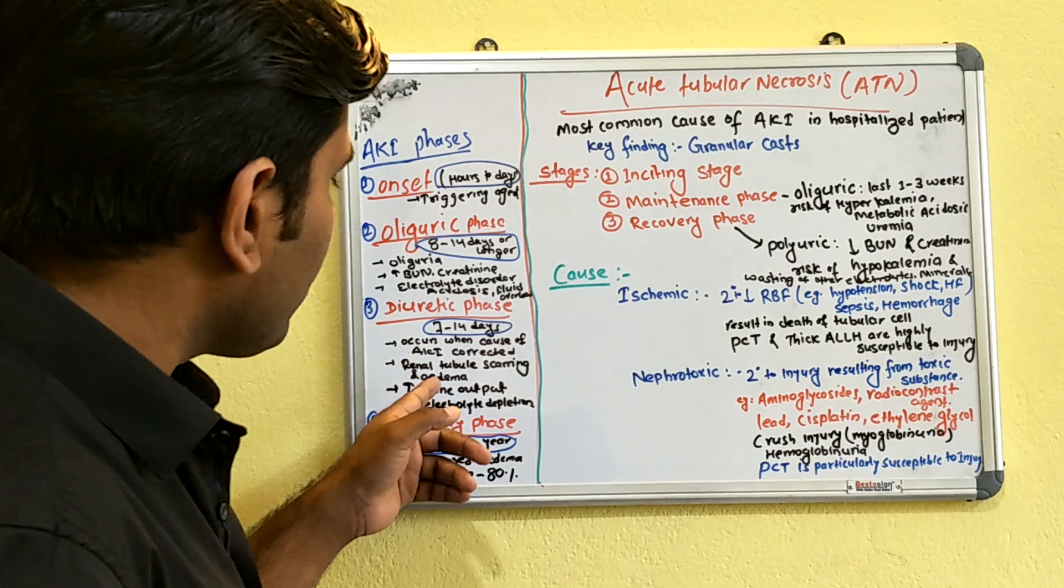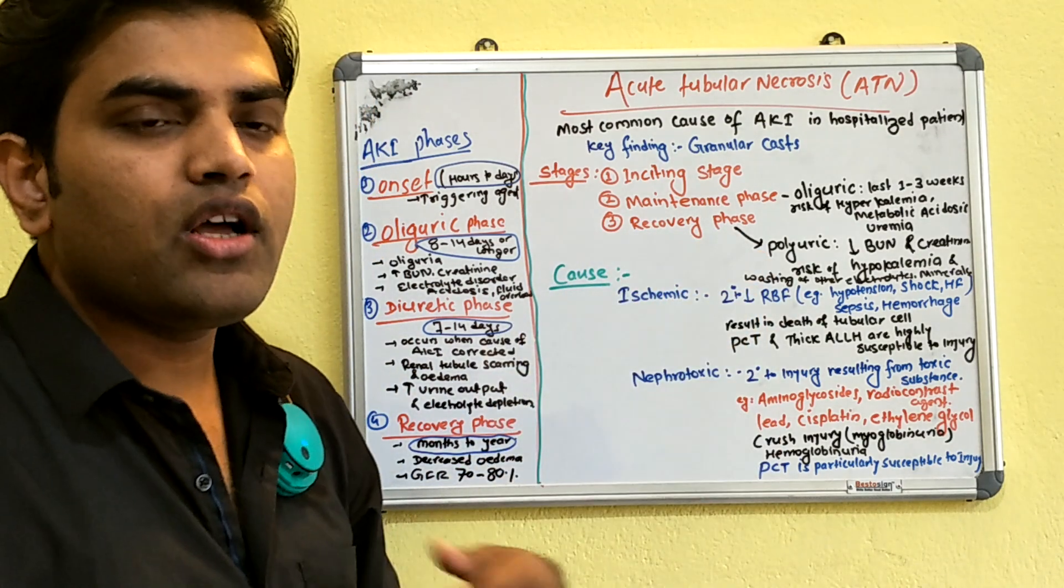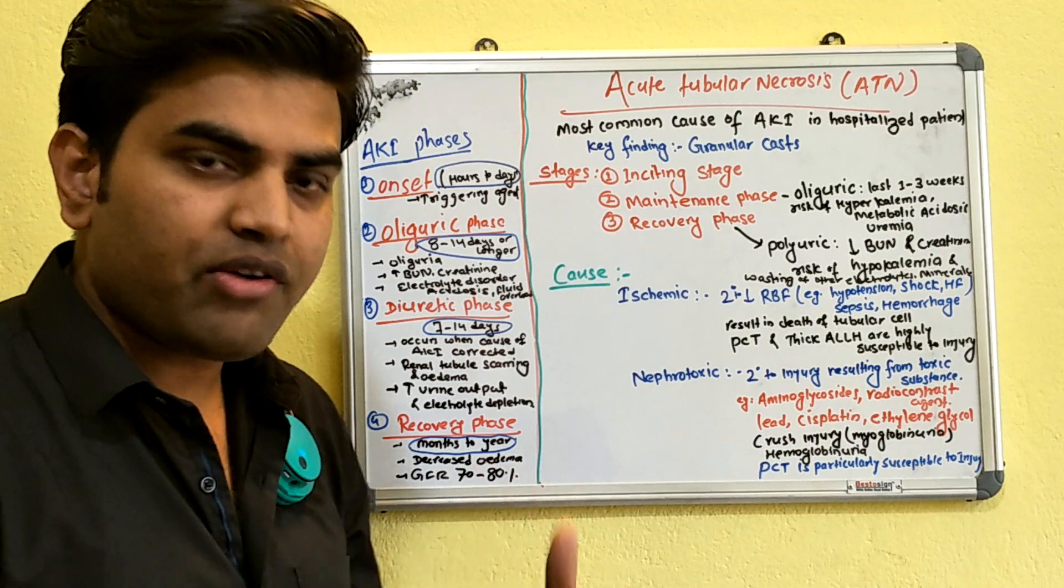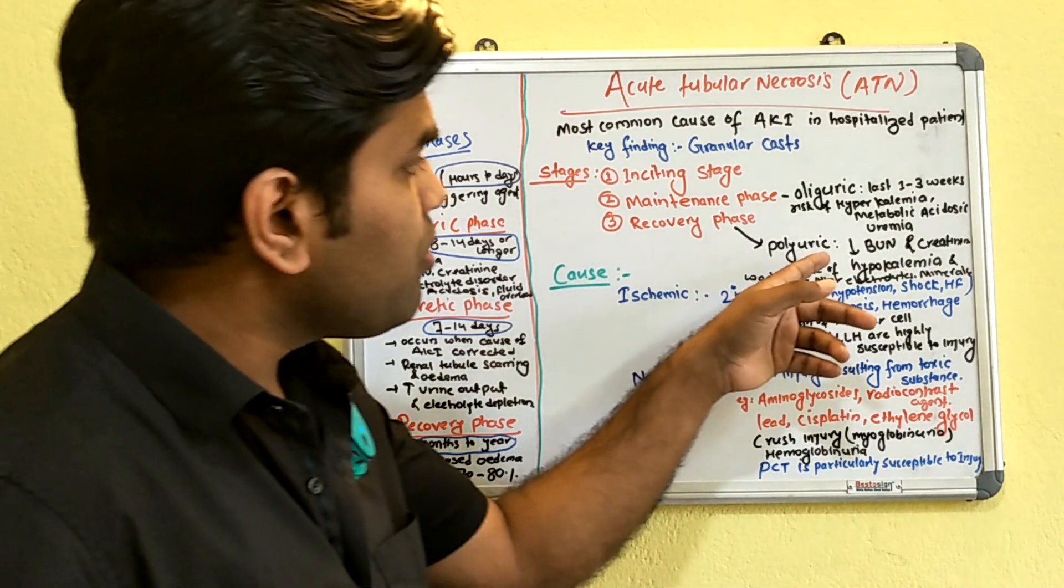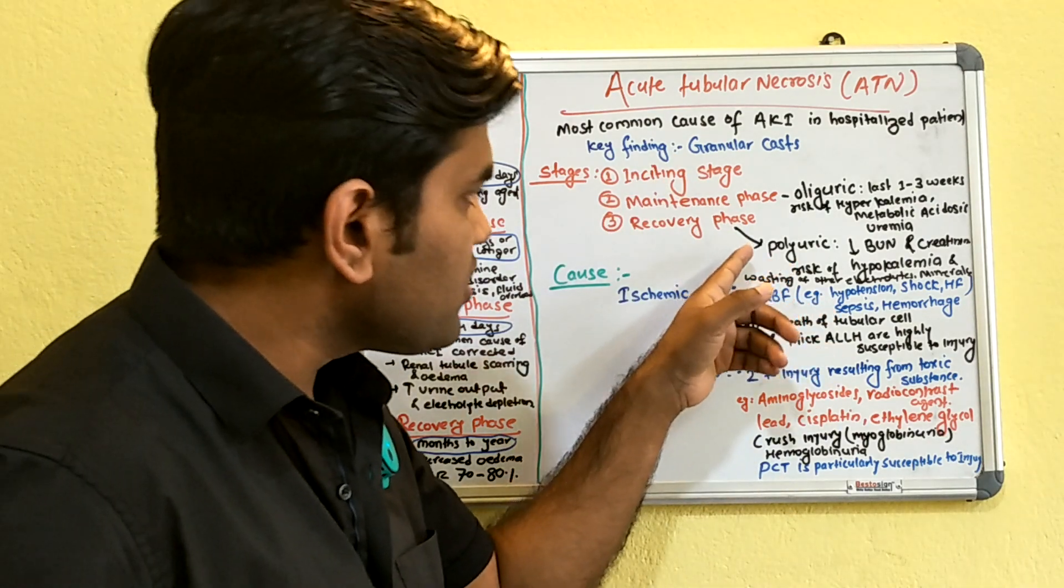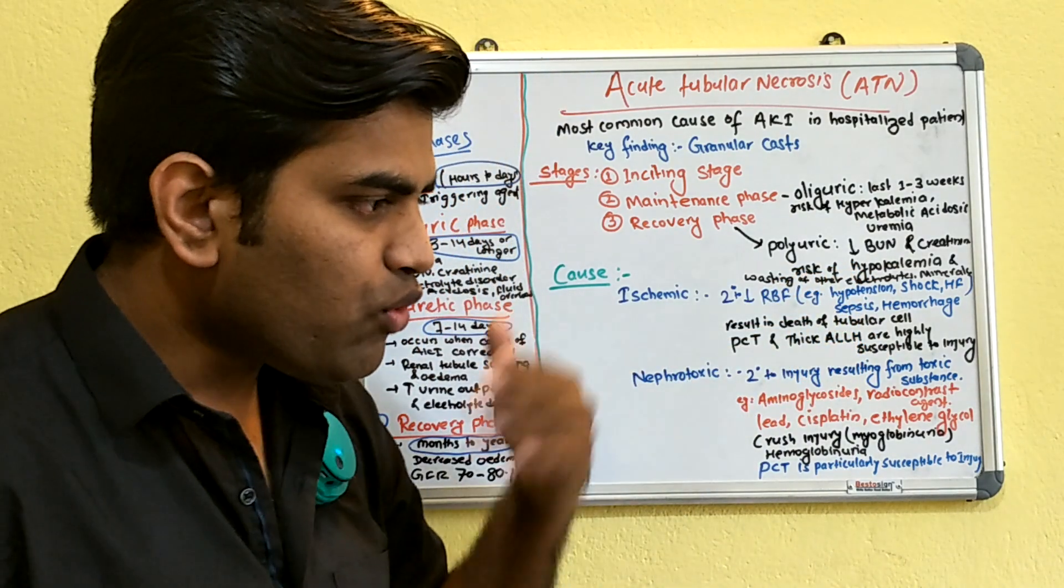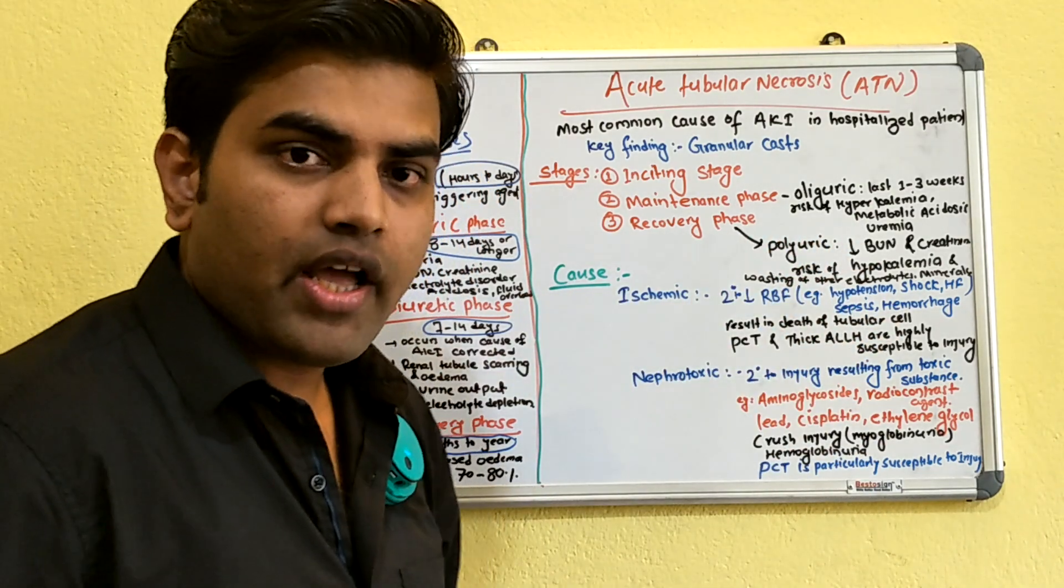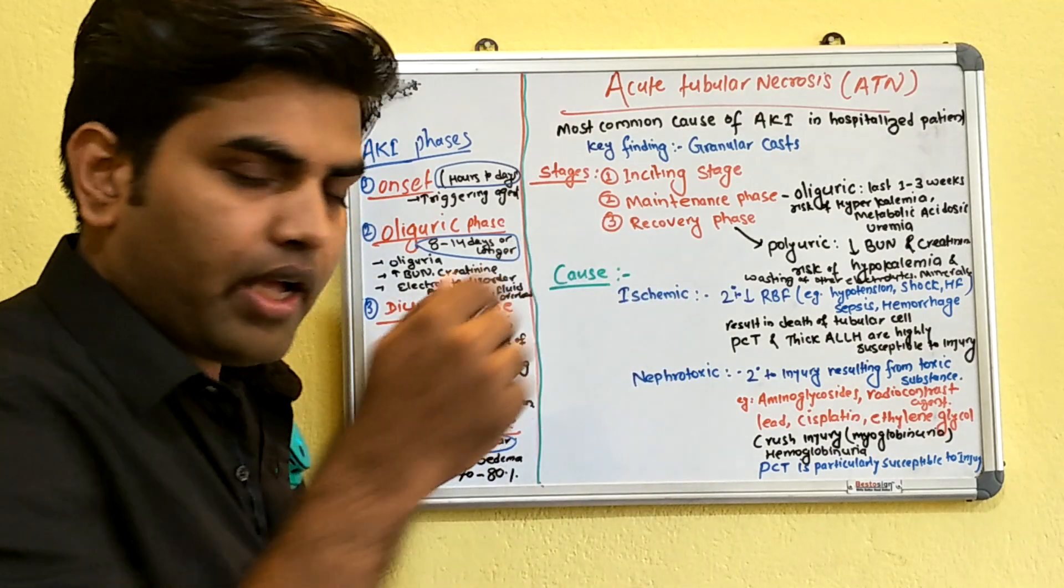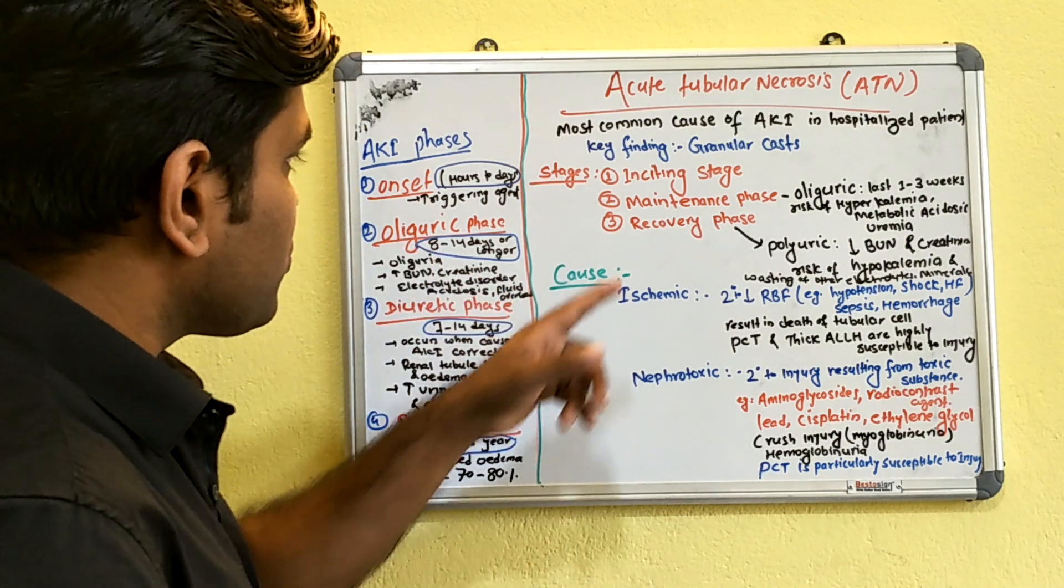In the oliguric phase, if you address the cause, the patient will recover and go into the recovery phase, which is actually a polyuric phase with more than normal urine formation. Since urine formation increases, there is a risk of hypokalemia and wasting of other electrolytes. This is the normal mechanism of resolving acute tubular necrosis.